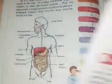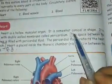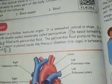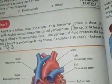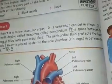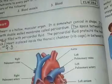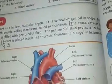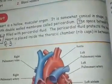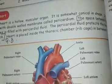Third question: what is the function of pericardial fluid? Page number four. The space between the membranes is filled with the pericardial fluid. The pericardial fluid protects the heart from shock. Mark the answer up to question three.